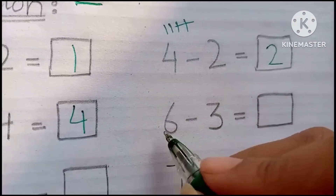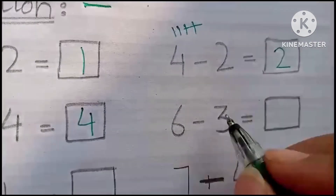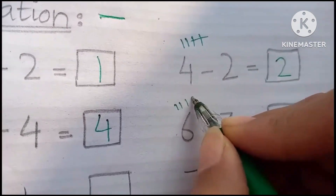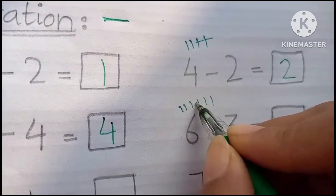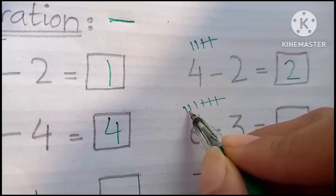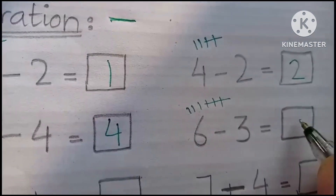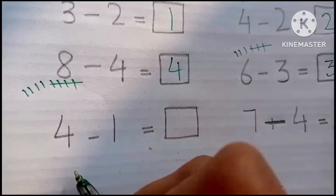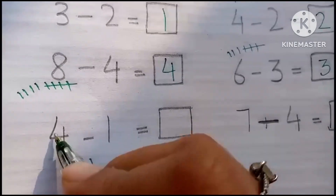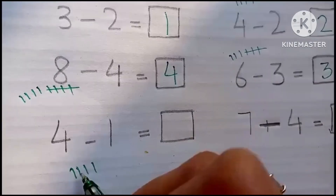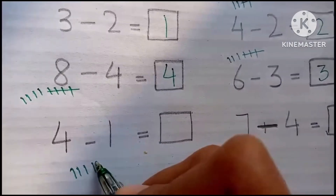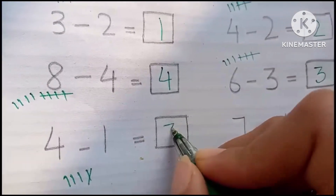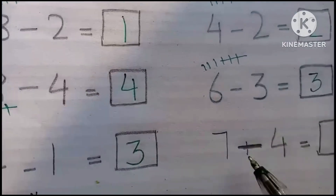Okay, then 6 minus 3: 1, 2, 3, 4, 5, 6, minus 3: 1, 2, 3. 6 minus 3 is 3. Okay, then 4 minus 1: 1, 2, 3, 4, minus 1. 4 minus 1 is 3.